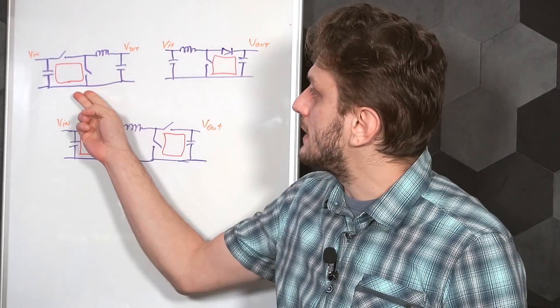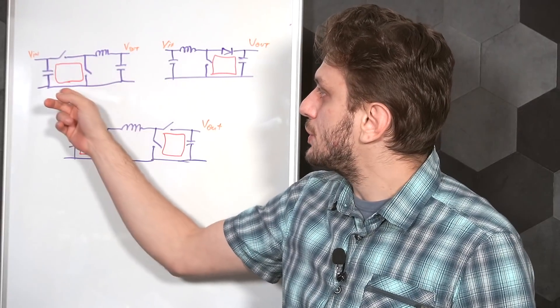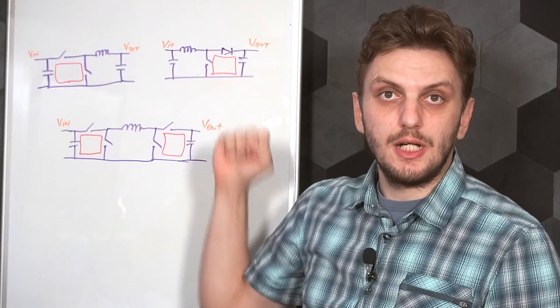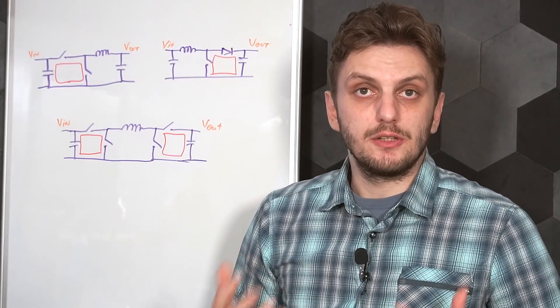Now the hot loop will always contain the switches in the converter. So for example, in the case of the buck, we have the hot loop around the input capacitor and switches. Whereas in the boost converter, we have it around the switches and the output capacitor.